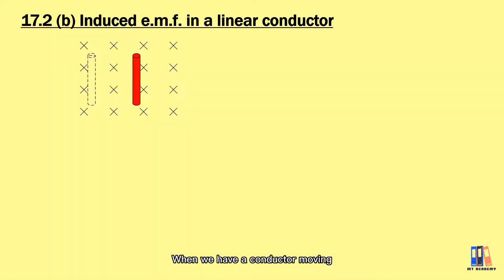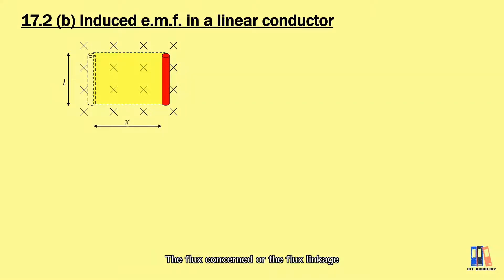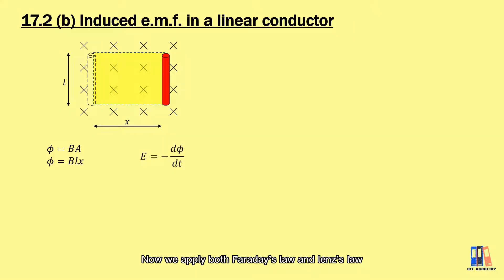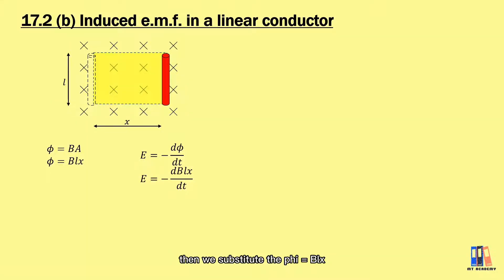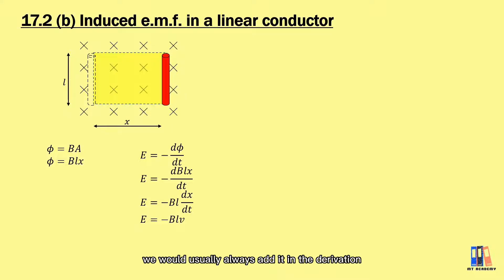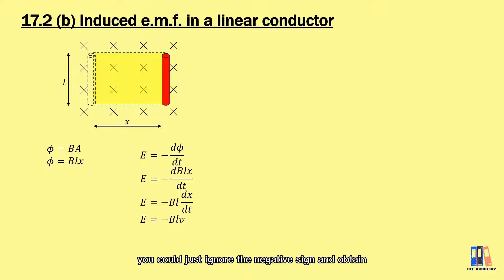Now let us look at the 2D model of this case. When we have a conductor moving through the magnetic field to the right, the flux linkage is defined as the product of magnetic flux density and the area, where the area equals the length of the conductor multiplied by the distance traveled. Applying both Faraday's law and Lenz's law, the induced EMF equals −dΦ/dt. Substituting Φ = BLx, and since dx/dt equals the velocity of the conductor, the magnitude of the induced EMF is equal to BLv.